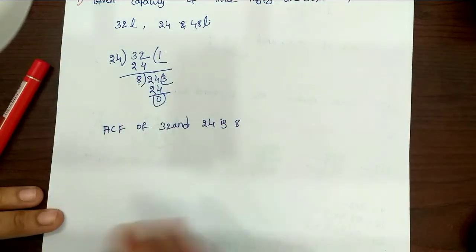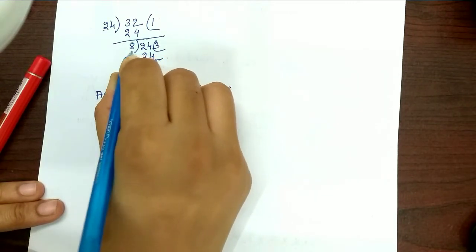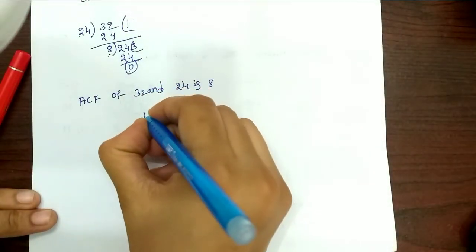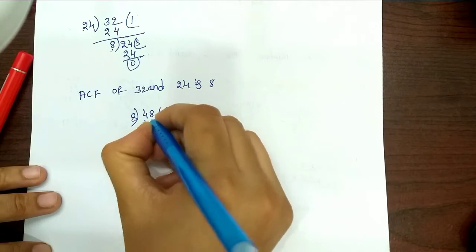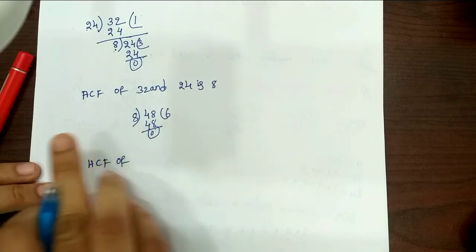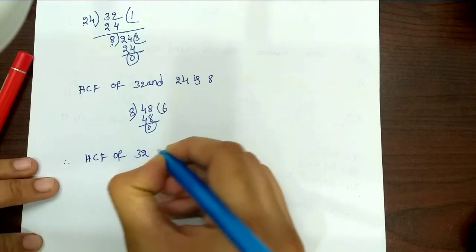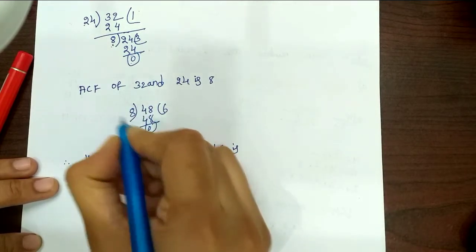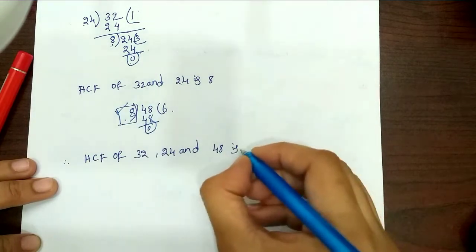Next, we compare 8 and 48. We divide 48 by 8. Remainder 0. So HCF of 32, 24 and 48 is 8.